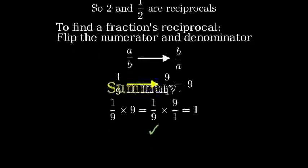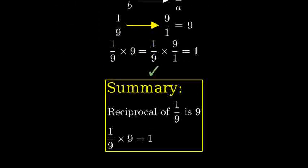To summarize, the reciprocal of one-ninth is nine, because when we multiply one-ninth by nine, we get one. Remember, to find a fraction's reciprocal, just flip the numerator and denominator.